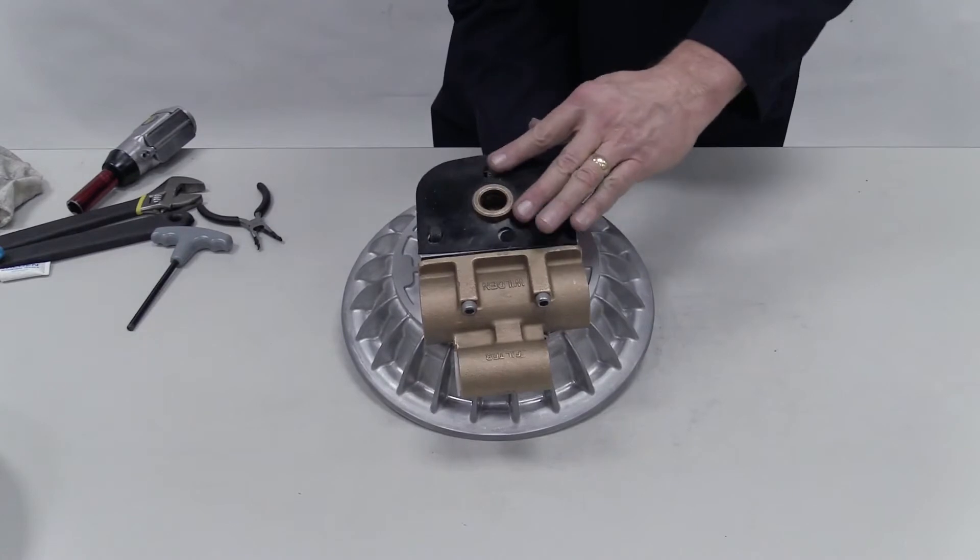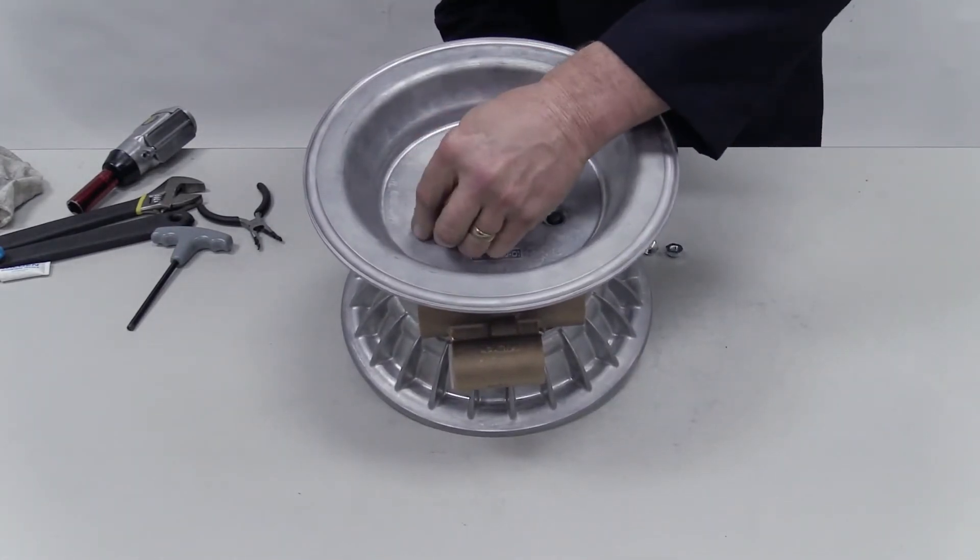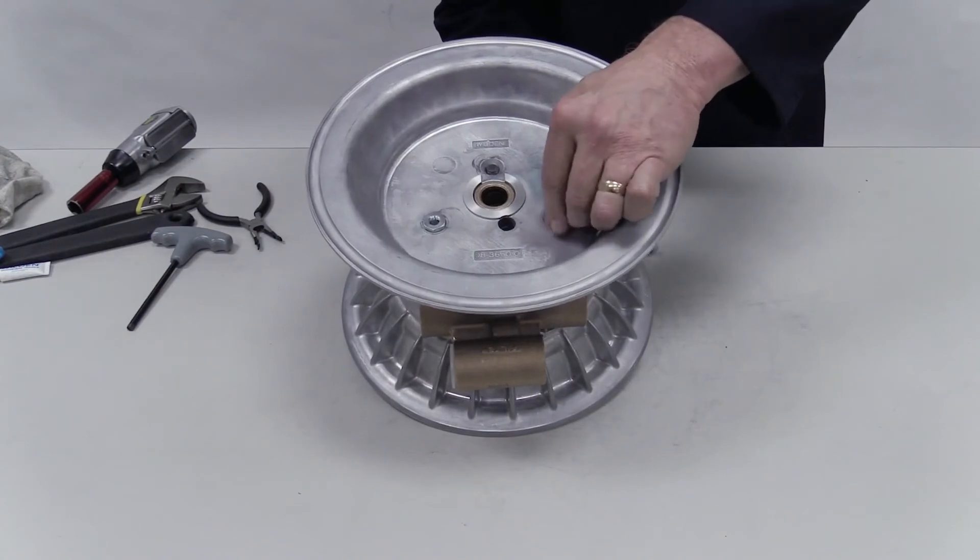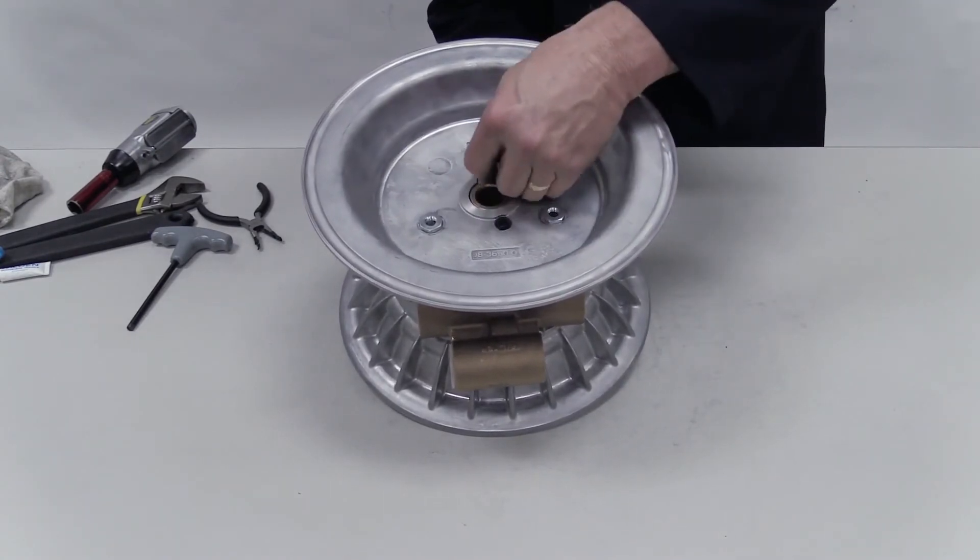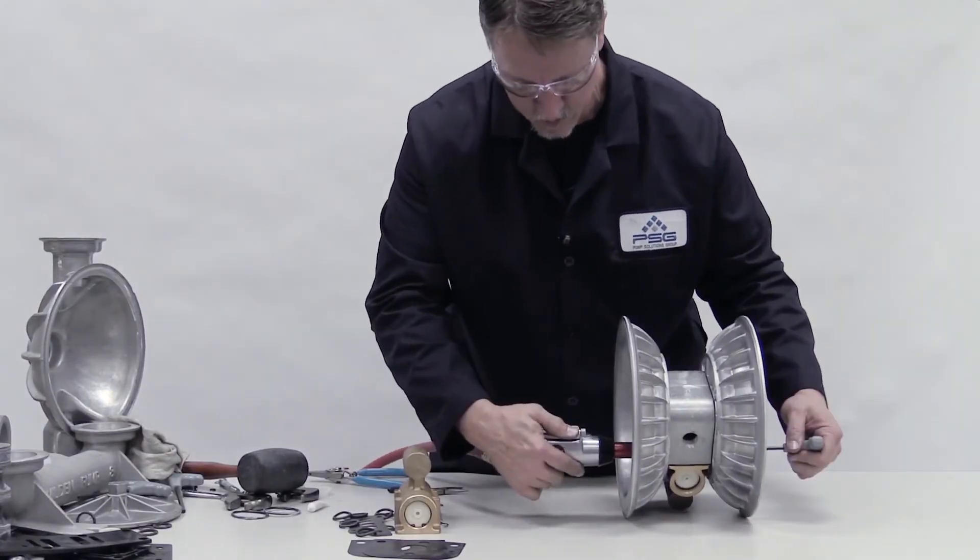Place the second block gasket and air chamber over the protruding screws. Insert the three air chamber nuts into the hex indentations on the air chamber over the screws. Reorient the pump and torque the screws to specifications.